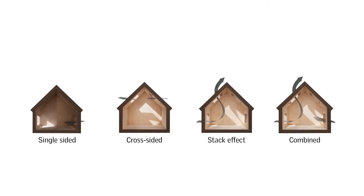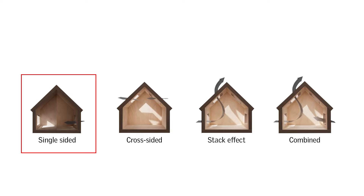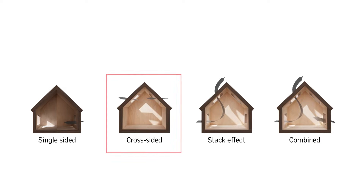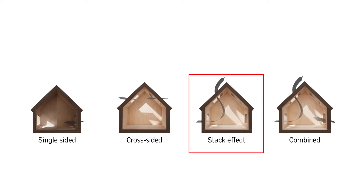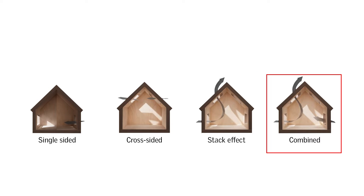Depending on the number and location of the openings, several natural ventilation effects can take place in a building. Single-sided ventilation occurs when all the windows or doors that are open are located on the same external facade. Cross ventilation occurs when windows or doors that are open are located on more than one external facade. Stack ventilation, also known as chimney effect, occurs by having vertical distances between the inlet and outlet openings, enhancing the buoyancy effect. Combined ventilation is when cross ventilation and stack effect occur simultaneously.